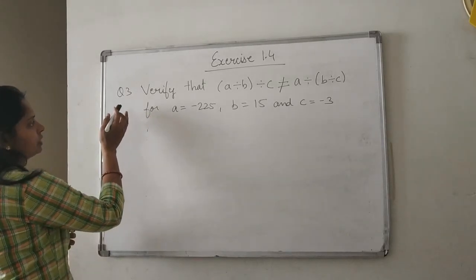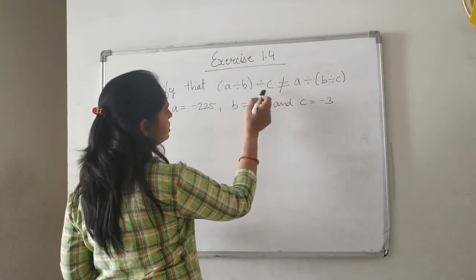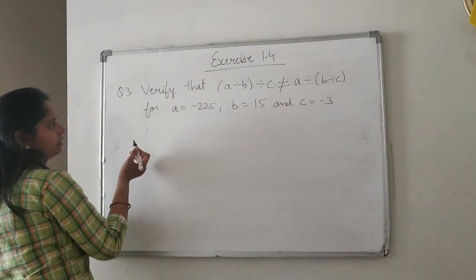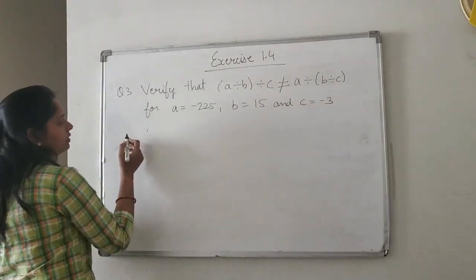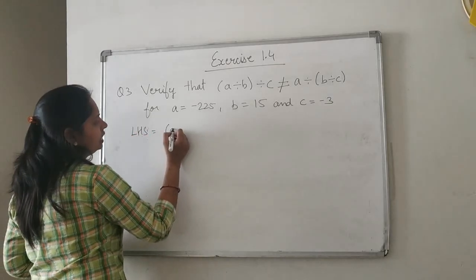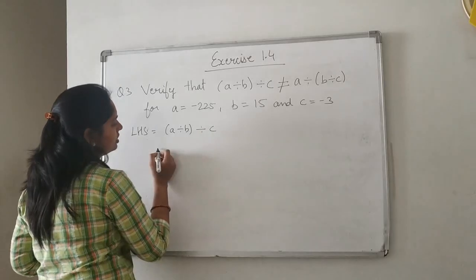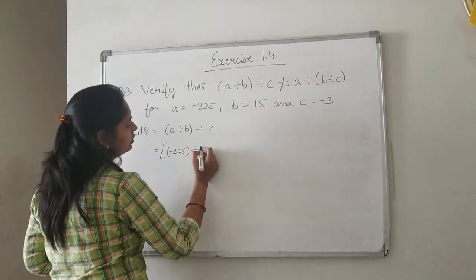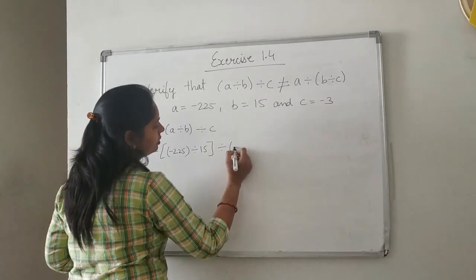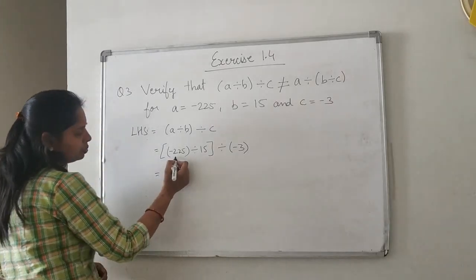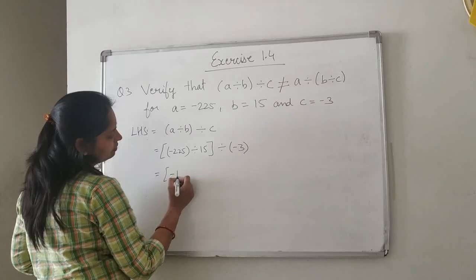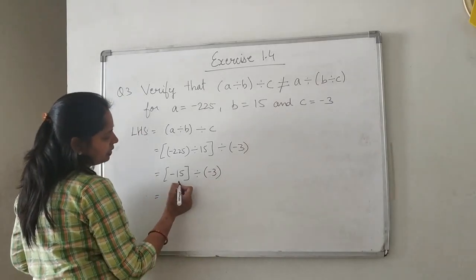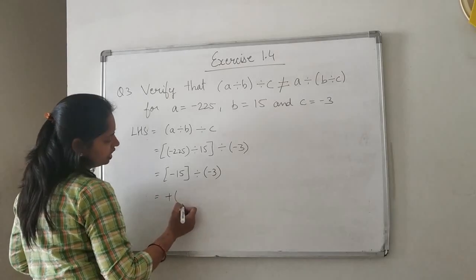Question 3: verify that (A ÷ B) ÷ C is not equal to A ÷ (B ÷ C). We need to put values in both sides. For the LHS: A ÷ B ÷ C. A is minus 225, B is 15, C is minus 3. So minus 225 divided by 15 gives minus 15, then minus 15 divided by minus 3 — both negative — gives positive 5.